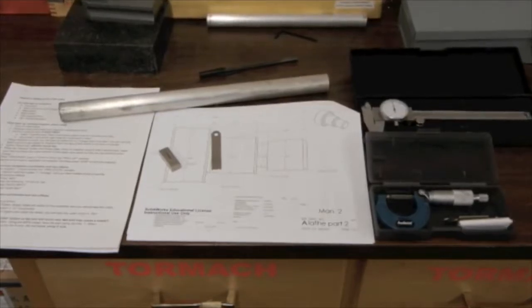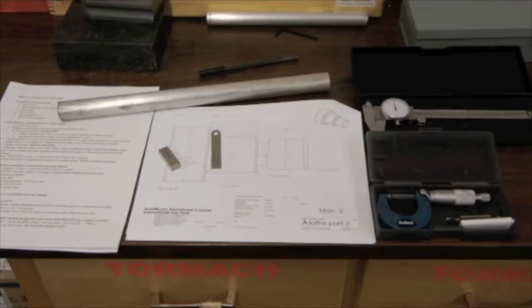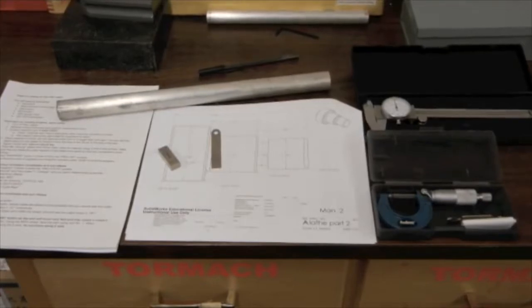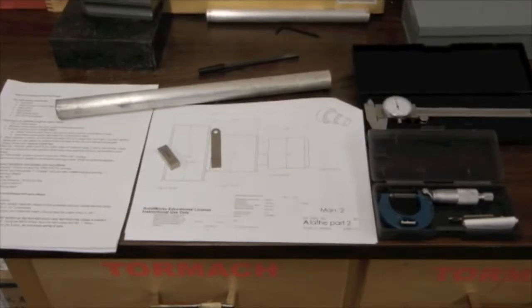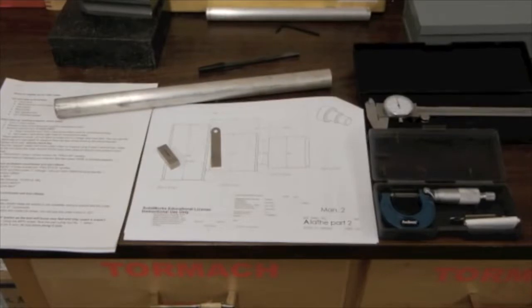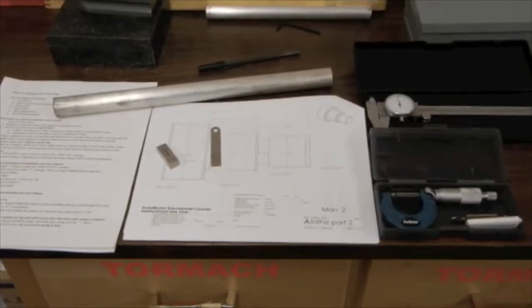You'll also need a dial caliper, a micrometer, a half inch gauge block, a one one thousandth thickness gauge, and something to write with.